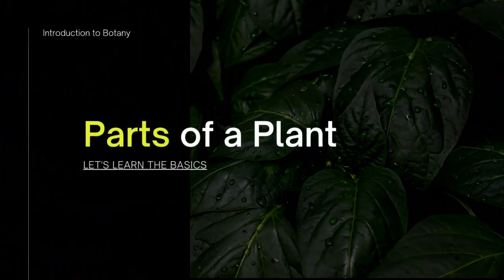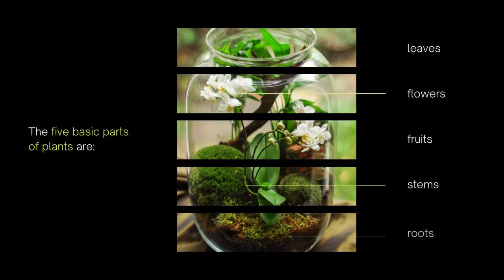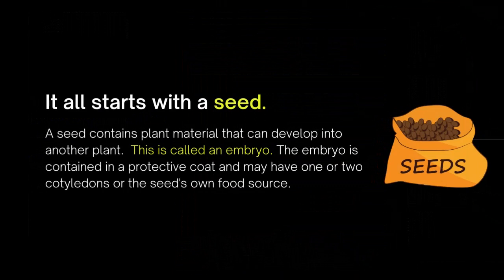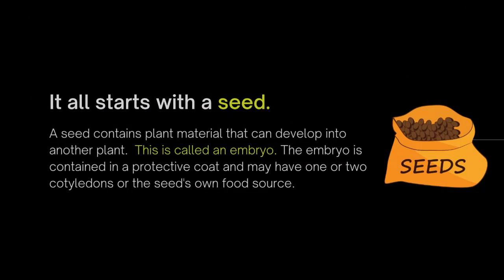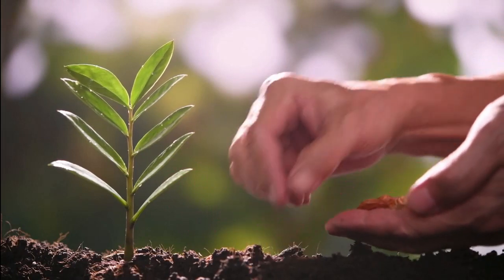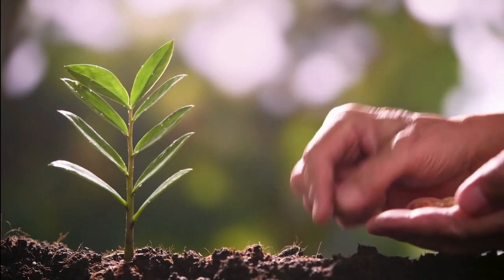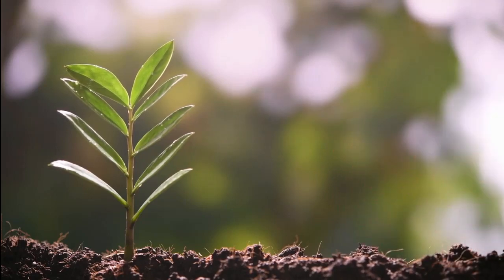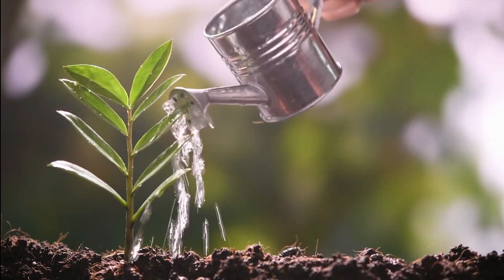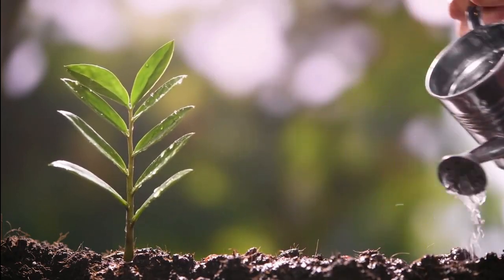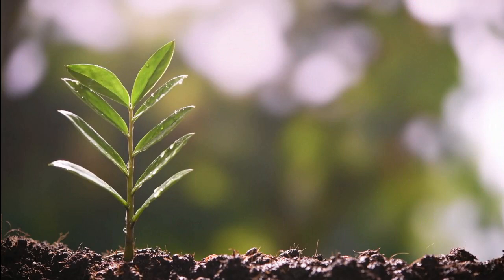The five parts of a plant are the leaves, flowers, fruits, stems, and roots. However, this all starts with a seed — this is called an embryo. The seed is planted deep into the soil, and then it's watered with a sufficient amount of water that hydrates the plant. With a sufficient amount of sunlight, the plant is able to grow.